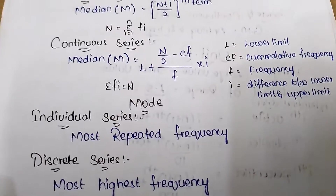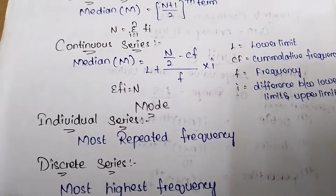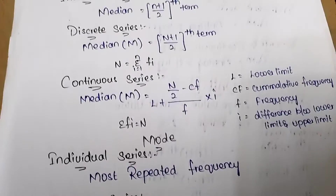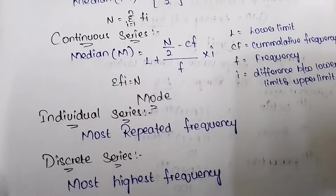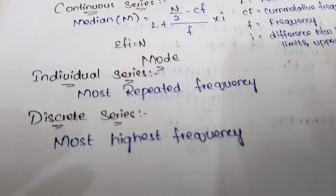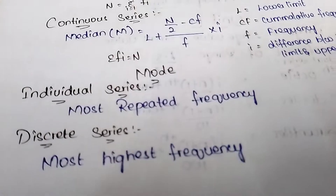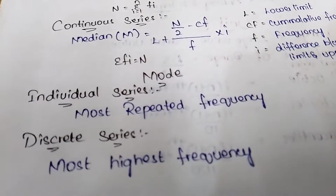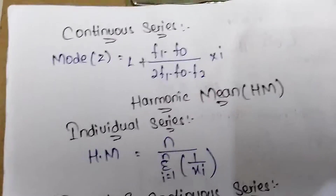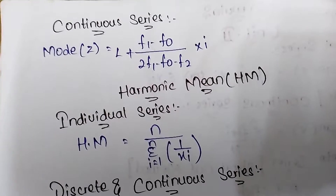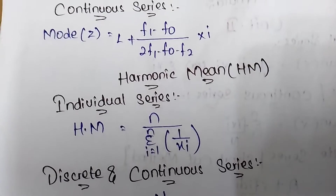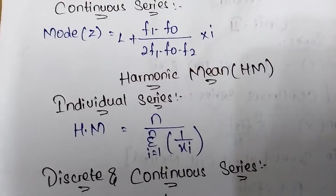Mode: for individual series, mode is the most repeated number. For discrete series, mode is the value with the highest frequency. For continuous series, mode Z = L + (f1 − f0) / (2f1 − f0 − f2) × i.